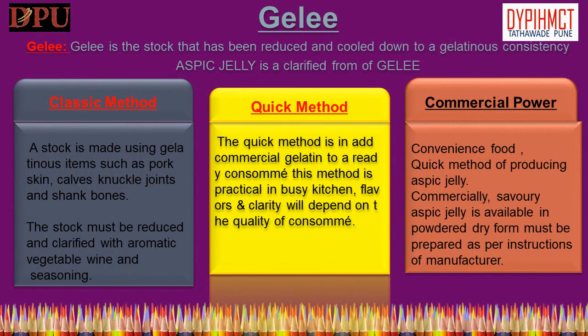Jelly is the stock that has been reduced and cooled down to a gelatinous consistency. Aspic jelly is a clarified form of jelly. Methods of preparation: 1. Classic method — a stock is made using gelatinous items such as pork skin, calf's feet, knuckle joints and shank bones; the stock is then reduced and clarified with aromatic vegetables, wine and seasoning. 2. Quick method — commercial gelatin is added to a ready consommé; the flavor and clarity depend on the quality of consommé. 3. Commercial powder method — the quickest method; savory aspic jelly is available in powdered form and prepared as per the manufacturer's instructions.